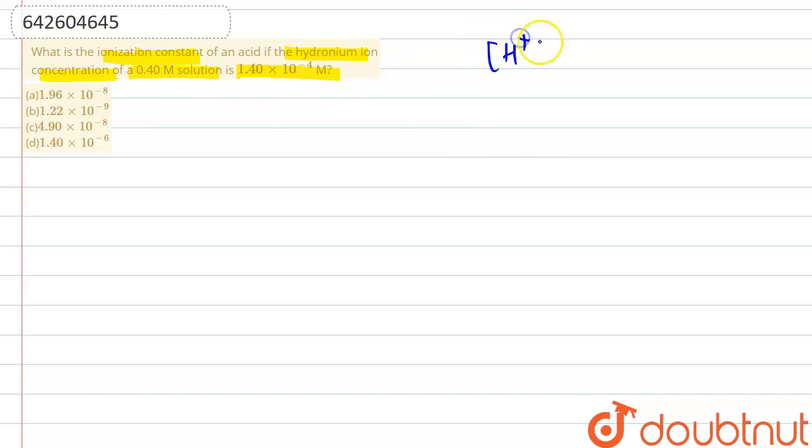It is given that hydronium ion concentration, or H+ or H3O+ concentration, is 1.40 × 10^-4 molar, and the concentration of this acid is given as 0.40 molar.